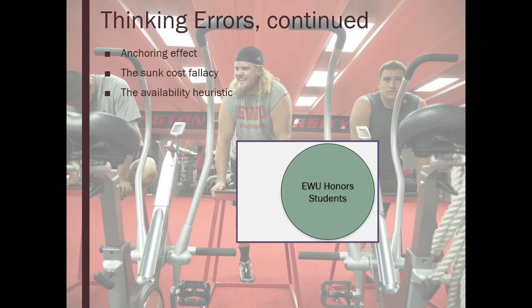Let's look at this through a probabilistic lens. Imagine this circle represents all Eastern Washington University students who are honor students, and this circle represents all EWU students who are football players. Note these circles are not drawn to scale — there are probably more honor students on campus than football players, and there's some overlap where some football players are honor students and vice versa.